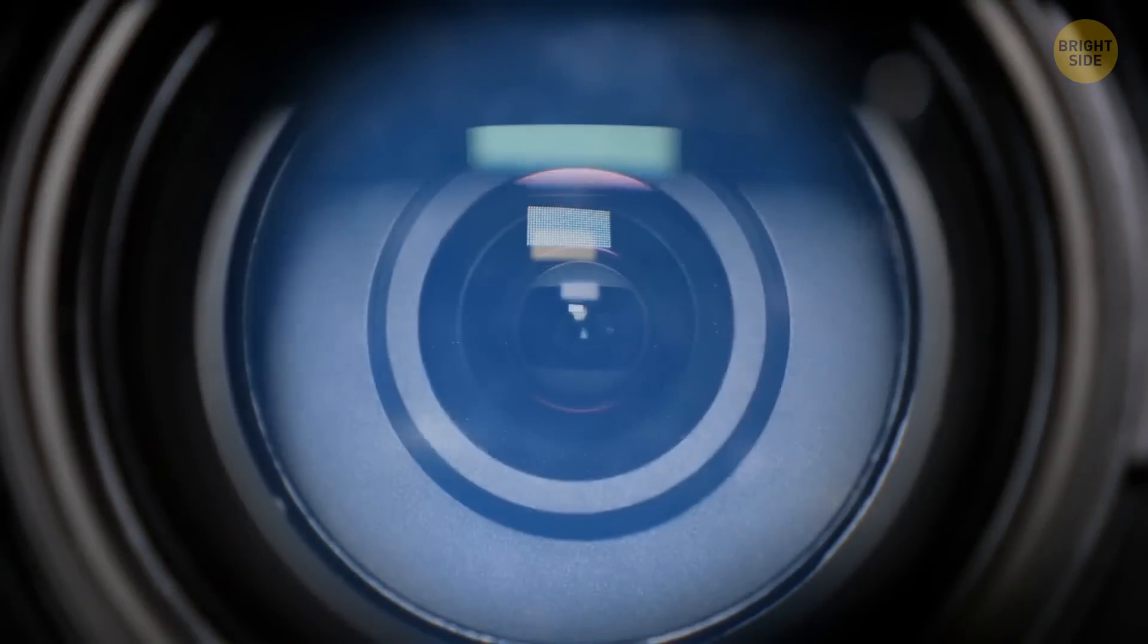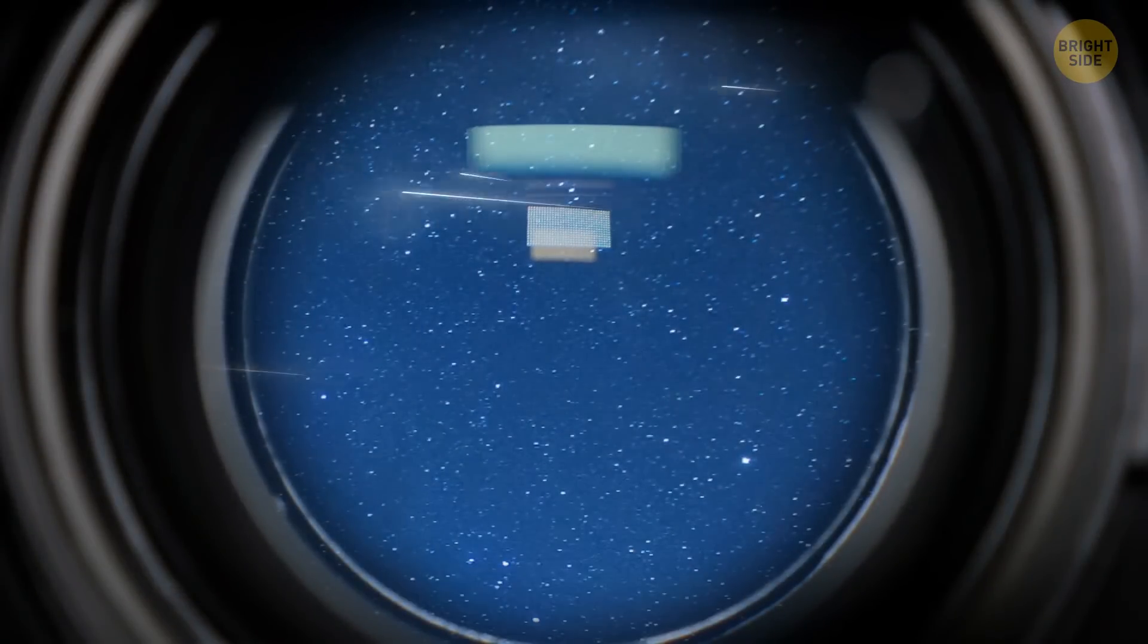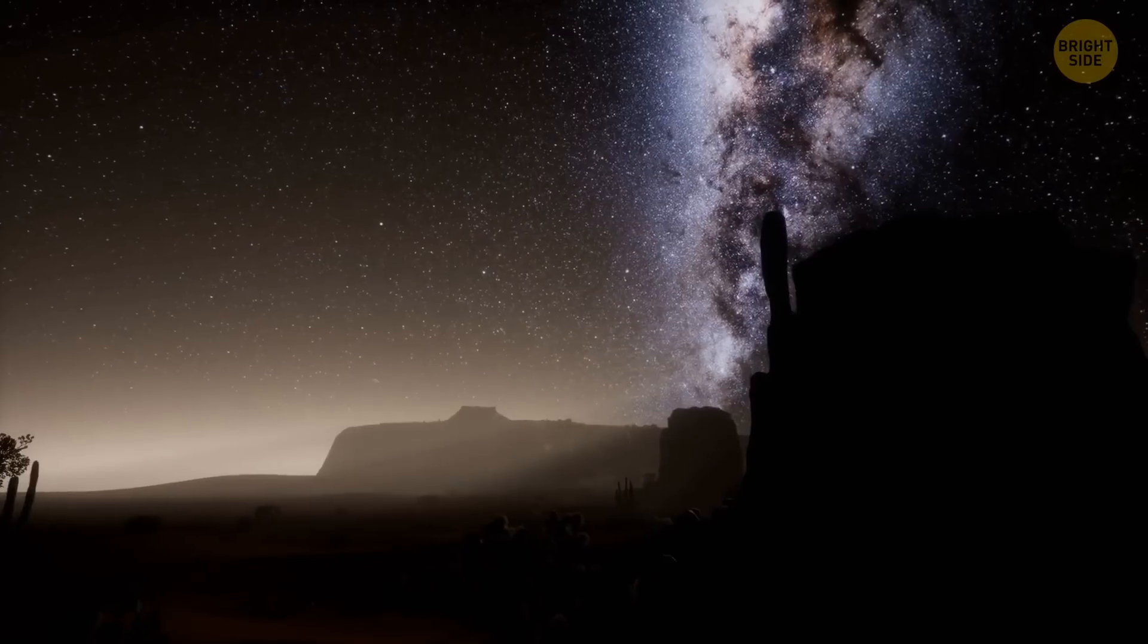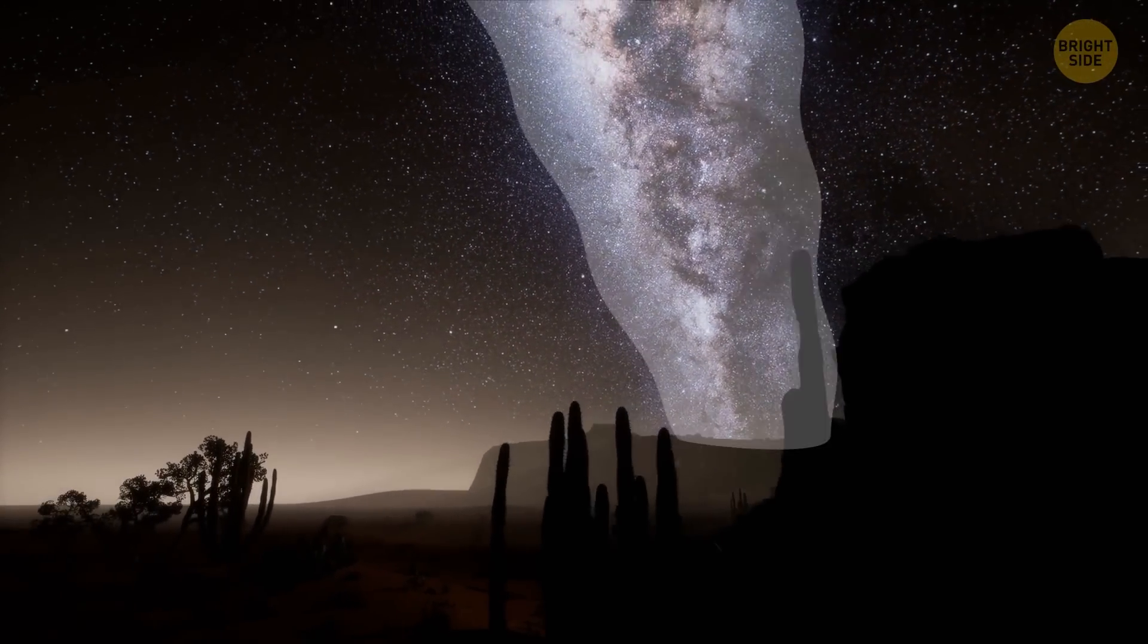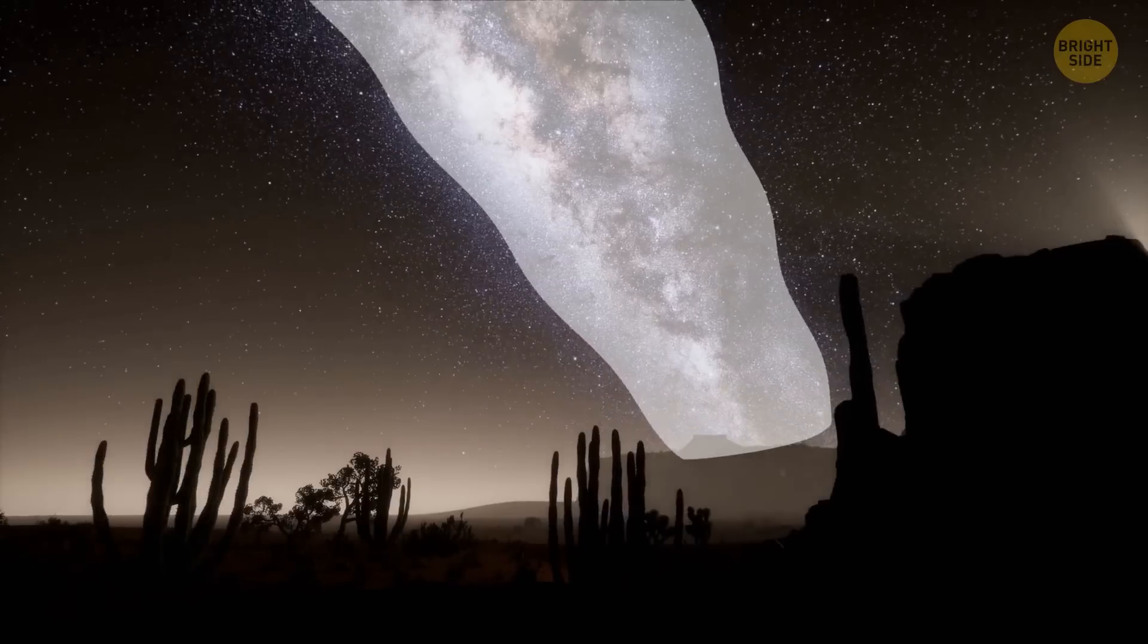Before telescopes were invented, people couldn't see stars clearly. They blurred together into a single white streak stretching across the sky. It looked like a river of milk. And that's how the name of our galaxy appeared.